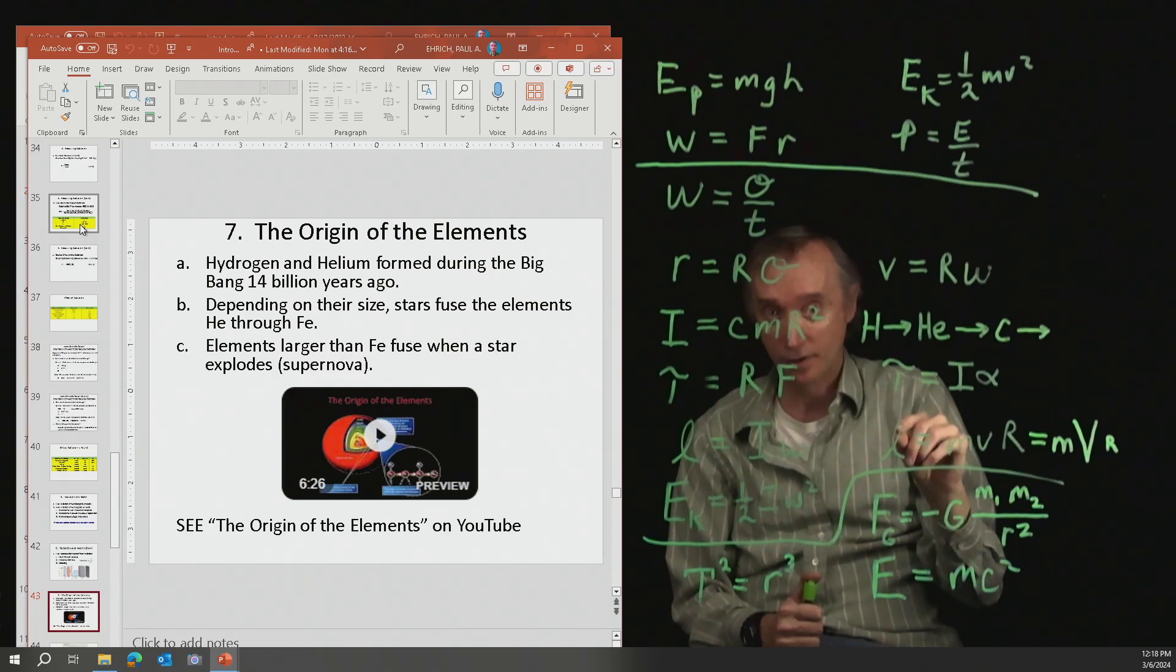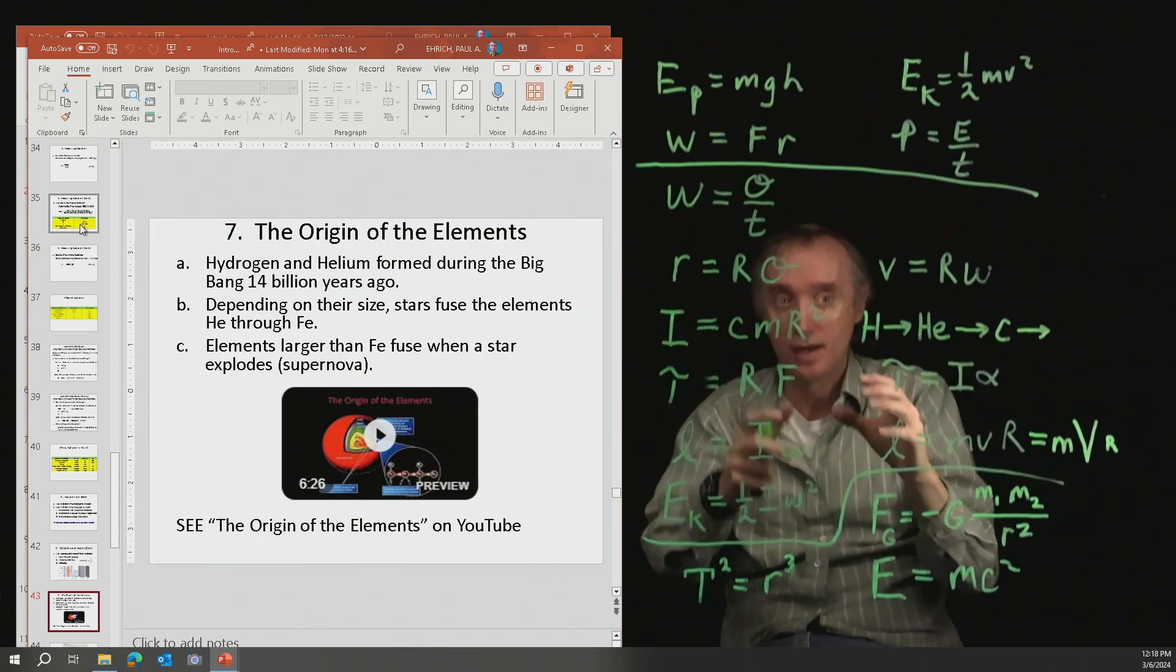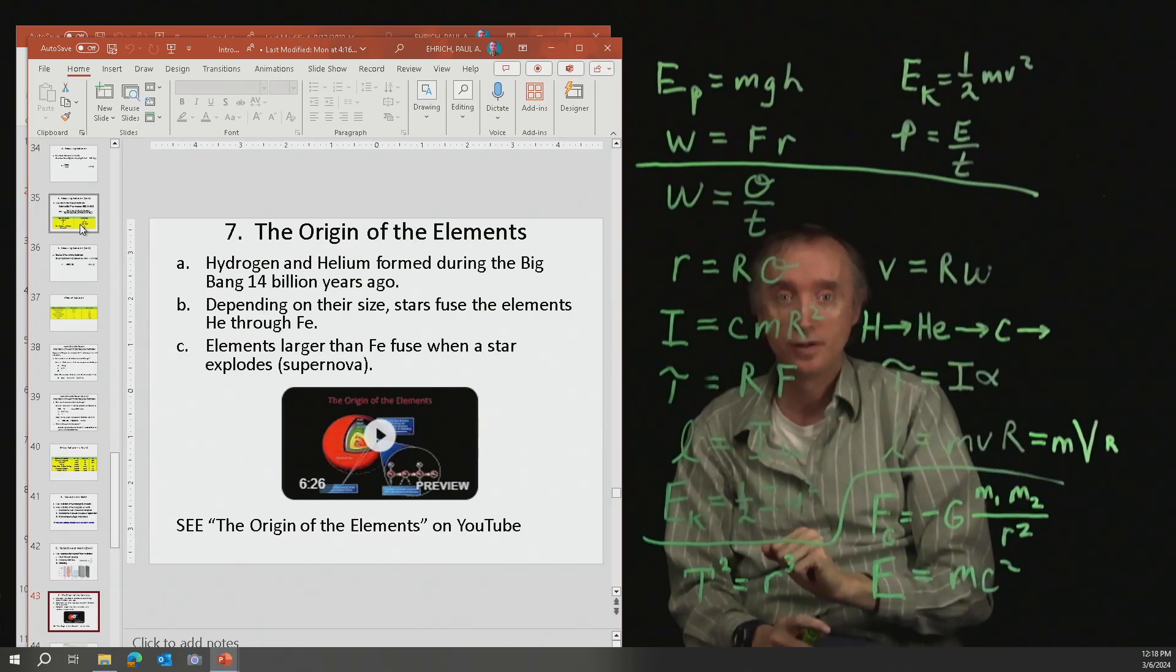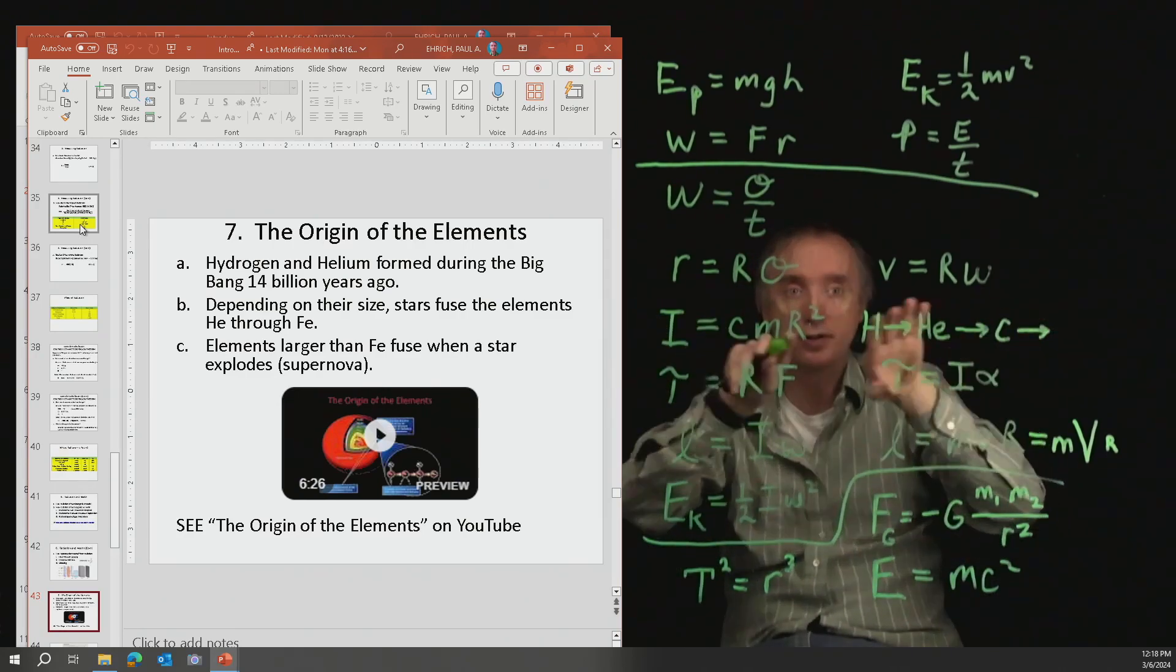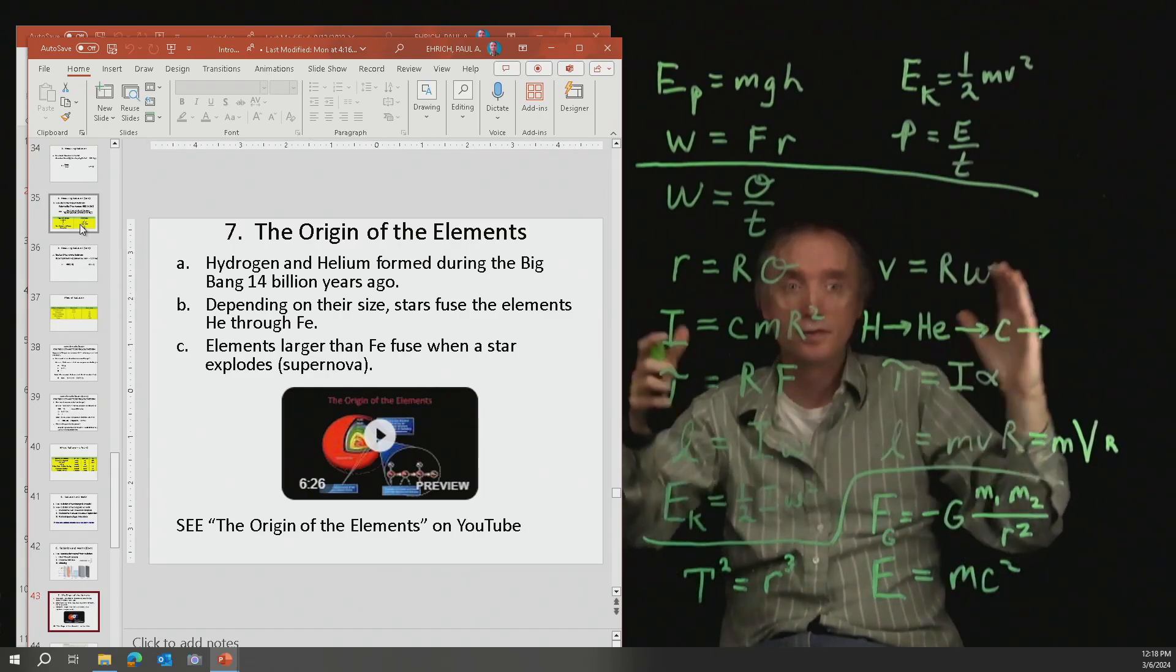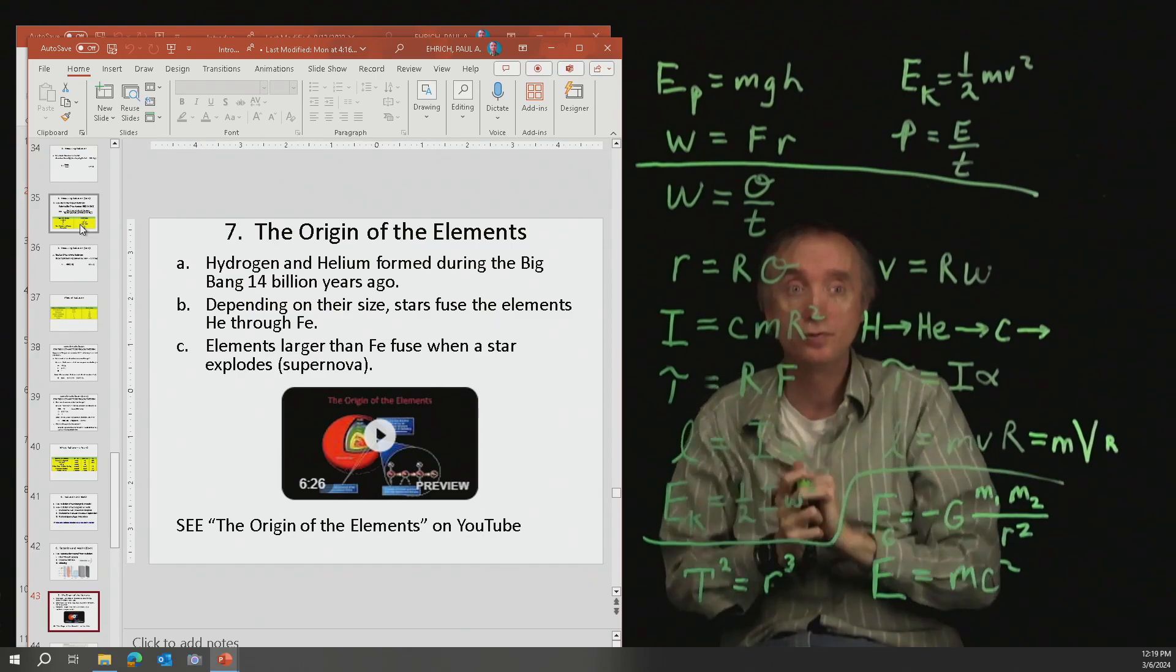Now, once it makes iron, that's really bad. Because when it collapses and you fuse the iron, nothing happens. There's no more nuclear explosions to keep gravity at bay. So then the star is going to collapse and it's going to explode as a supernova.